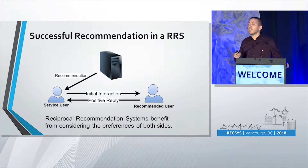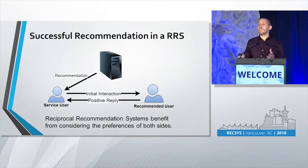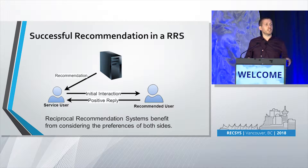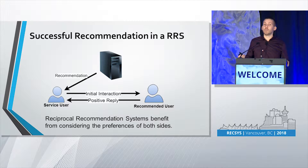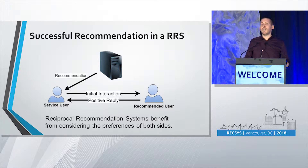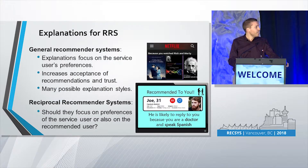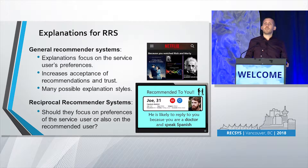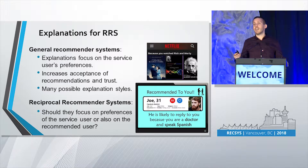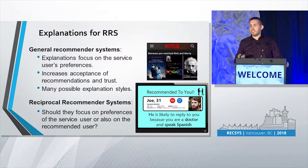Now, the quality of a recommendation in a reciprocal recommender system depends on two decision makers — both the recommendation receiver, which I will call from now on the service user, and the recommended user. In order for the recommendation to be successful, both parties need to want to accept this recommendation in order to form the match. So in order for a reciprocal recommendation system to increase the number of successful recommendations, it must contemplate the interest of both sides, and this has been shown in the research.